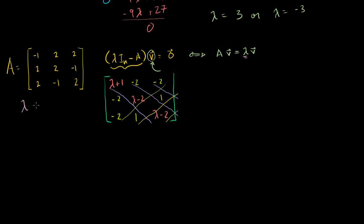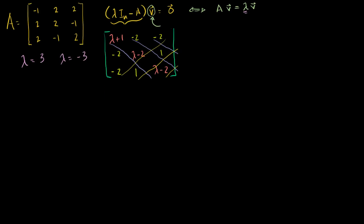We got our eigenvalues: lambda is equal to 3 and lambda is equal to minus 3. Now let's do what I consider the more interesting part — actually finding the eigenvectors, or the eigenspaces. For any eigenvalue, this matrix times your eigenvector must equal 0. Lambda times the identity matrix minus A gives us this matrix for any lambda.